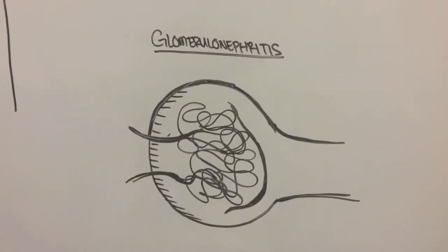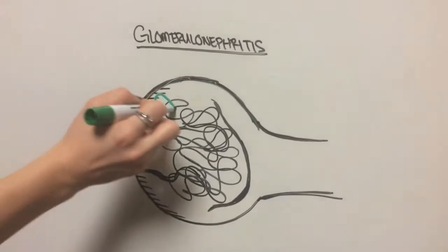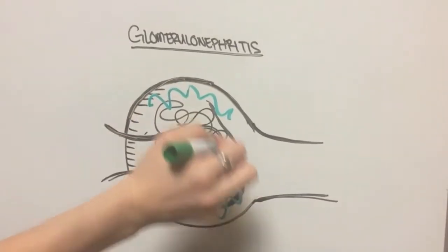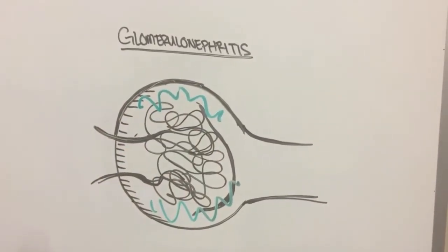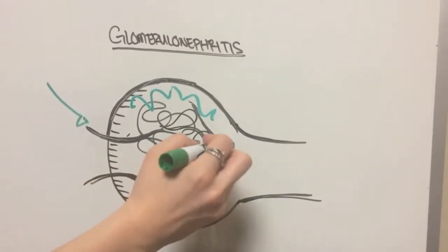In glomerulonephritis, the glomerulus is inflamed. Cells' membrane becomes more permeable and more leaky, resulting in altered filtration and the passing of larger molecules such as proteins and red blood cells.